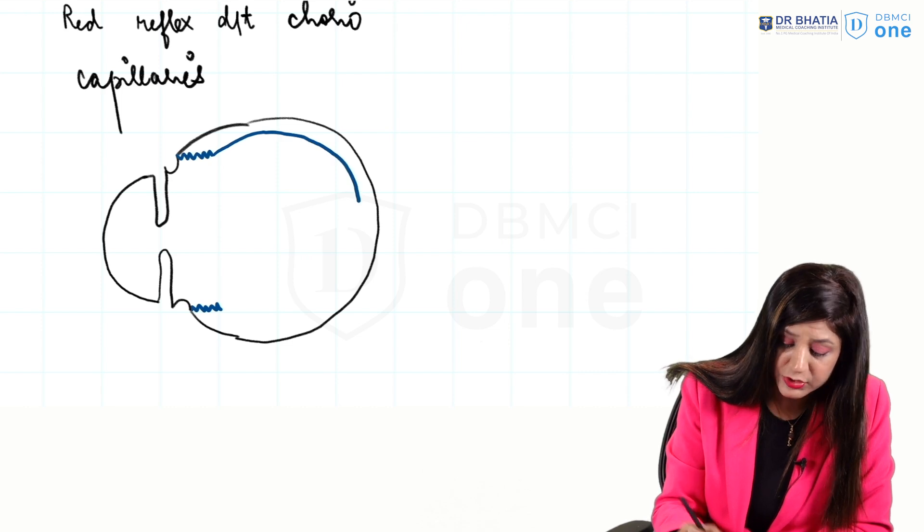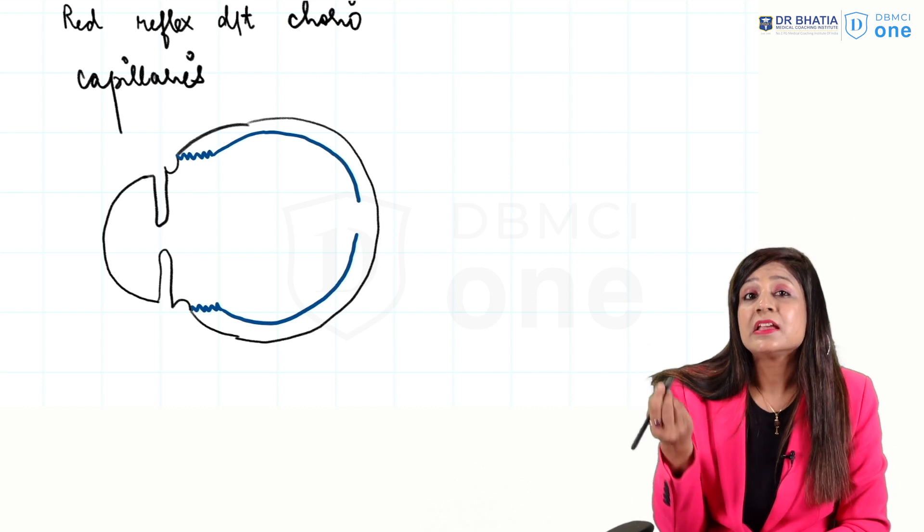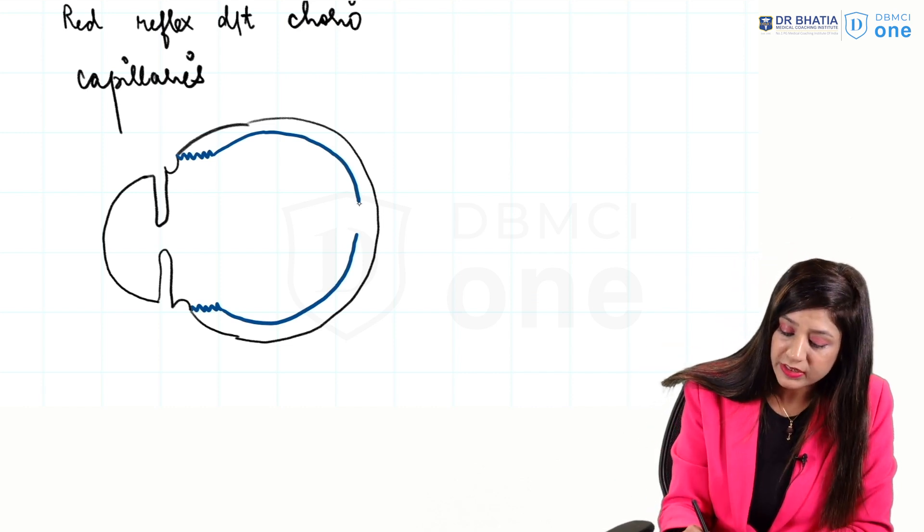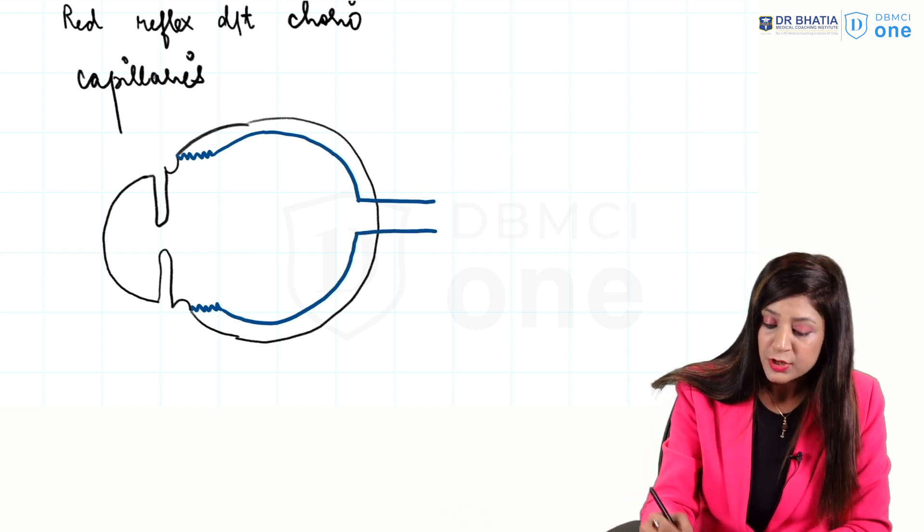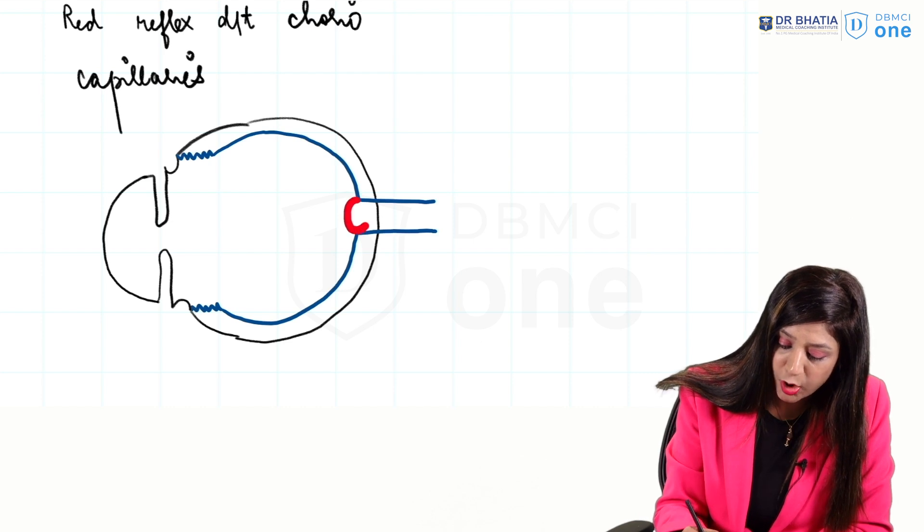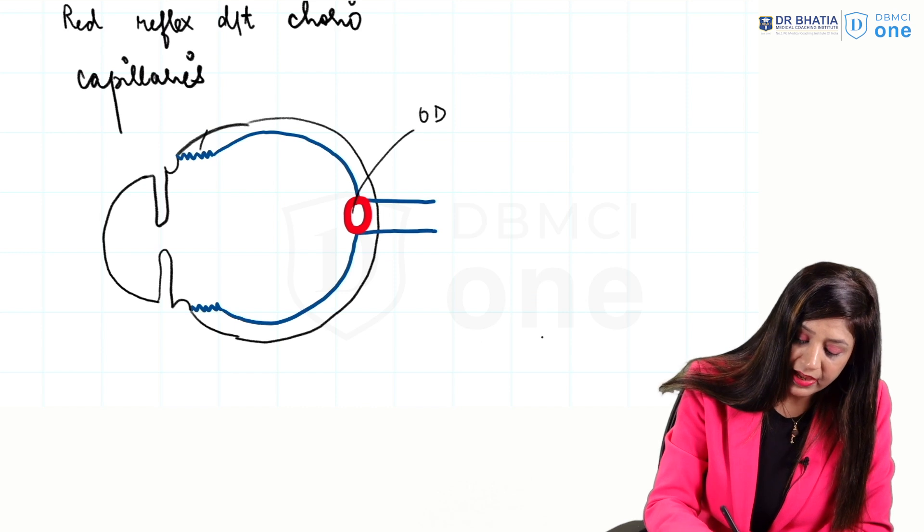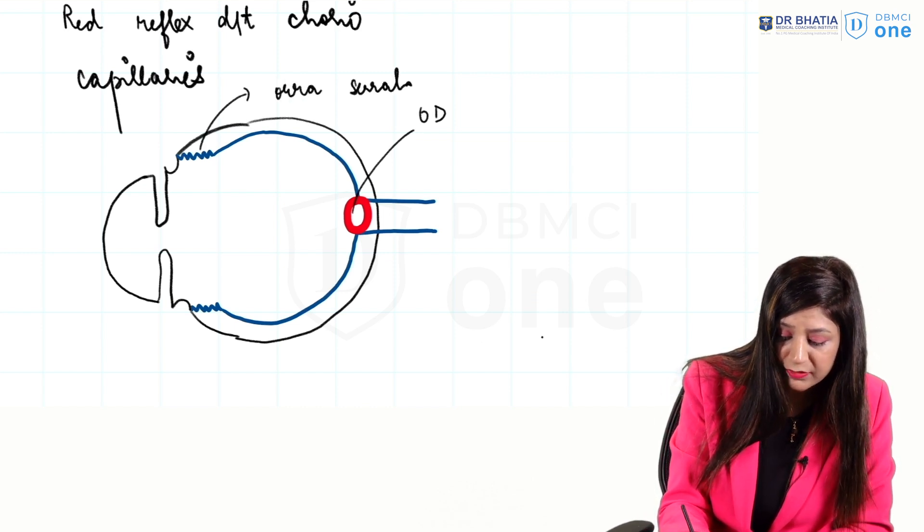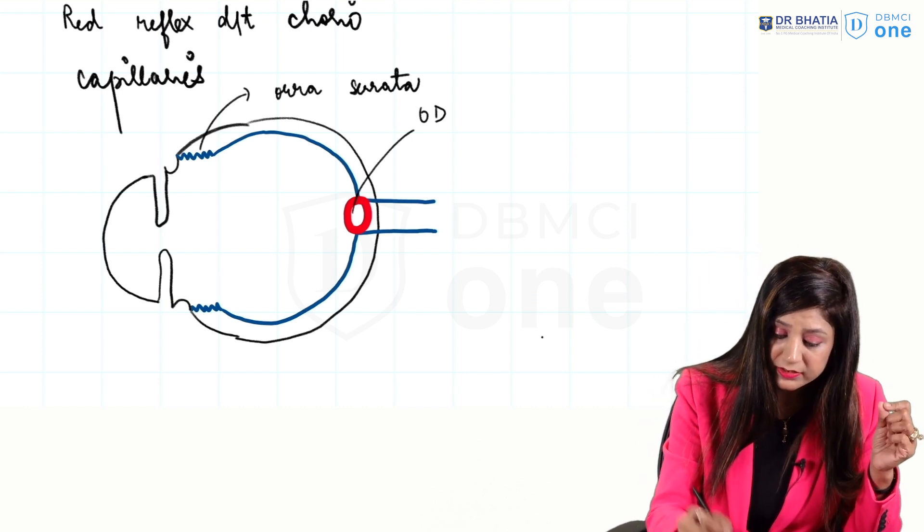There are 10 layers in the retina. These 10 layers are going backward and out of these 10 layers, only one layer will continue to form the optic nerve. The front portion here will form the optic disc. This is the optic disc and this will be the ora serrata, and in between the two we will have the retina.